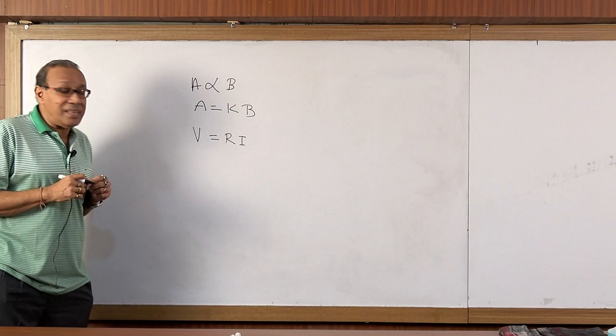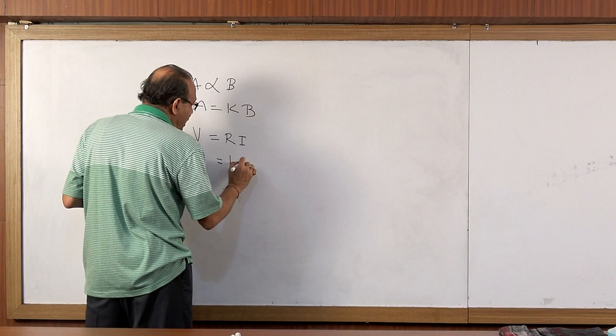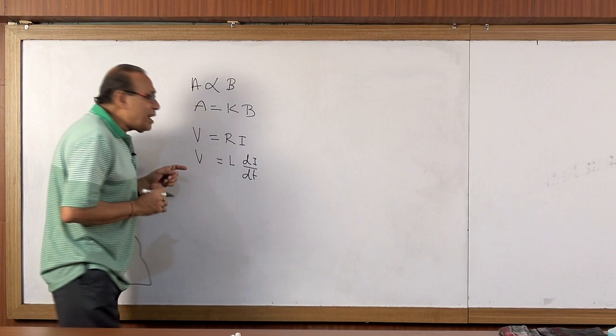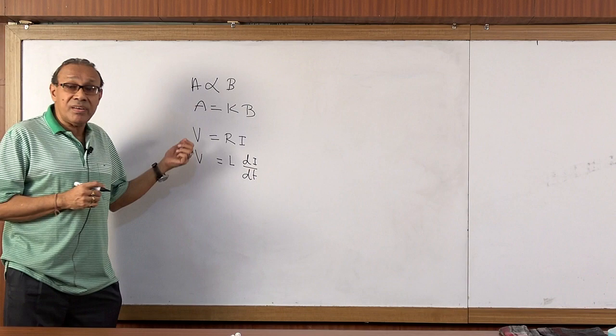As you know, another person came, his name is Faraday. He says, put A equal to E, put K equal to L, and put B equal to di/dt. It is called Faraday's laws of electromagnetic induction. It is inductance voltage.